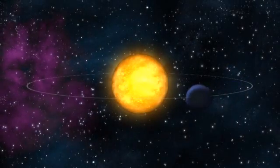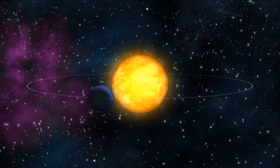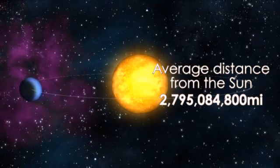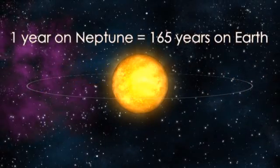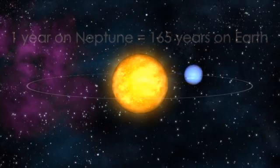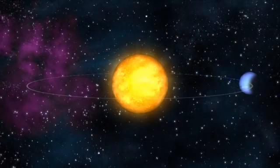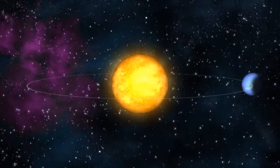Like the other planets, Neptune has an elliptical orbit. It is 2.8 billion miles from the sun on average and takes 165 Earth years to complete a single orbit. In 2011, it completed its first full orbit of the sun since its discovery in 1846.